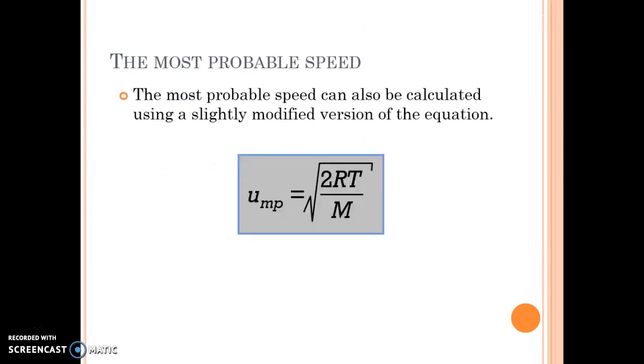Another idea is the most probable speed. You can also calculate that. So notice that it looks really similar to the root mean square speed. Do you remember what the only difference is instead of a three? We've got a two here. So everything else is the same.